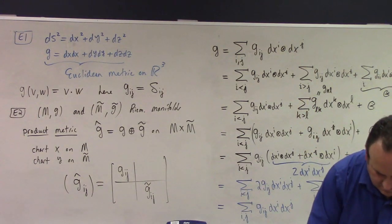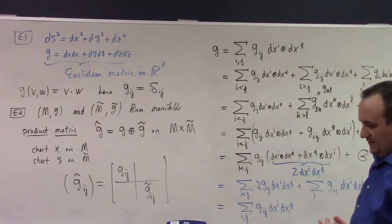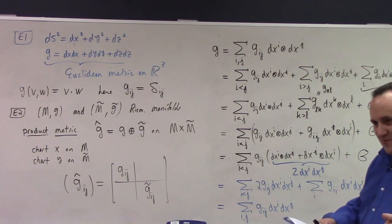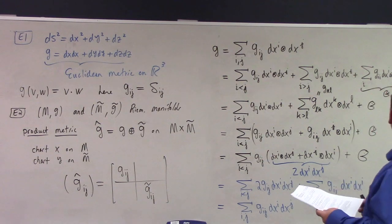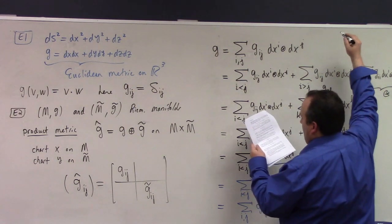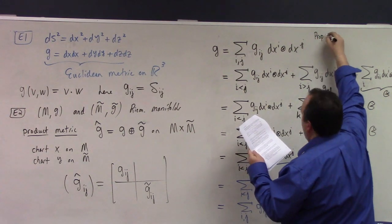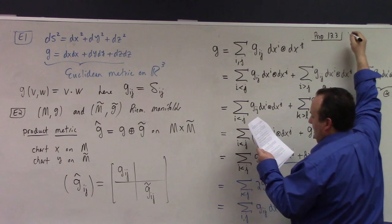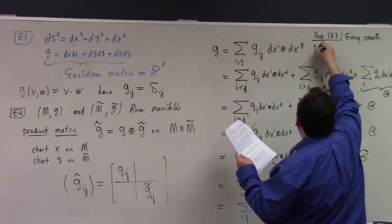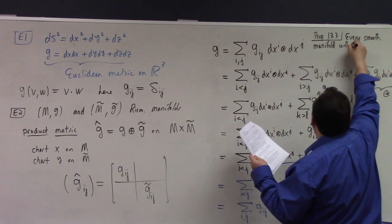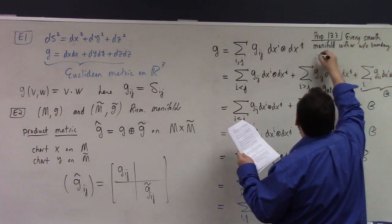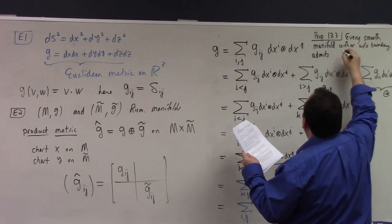g hat, which is the external direct sum of g and g̃ on the product manifold. We talked about how to construct the product manifold from manifolds early on, right? You just kind of pair their charts, and it gets you a chart on the pair on the Cartesian product. There's that.